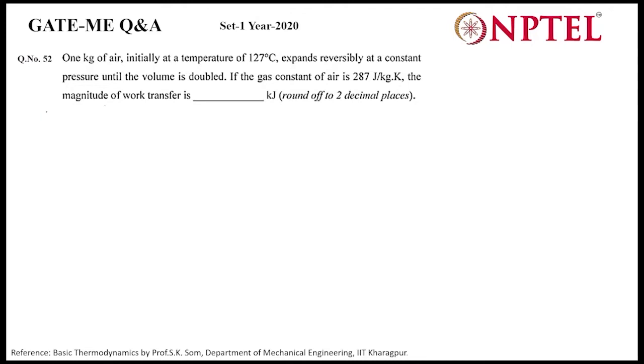This is from thermodynamics. First we read the question: One kilogram of air, initially at a temperature of 127 degree Celsius, expands reversibly at a constant pressure until the volume is doubled. If the gas constant of air is 287 joule per kg kelvin, the magnitude of work transfer is...